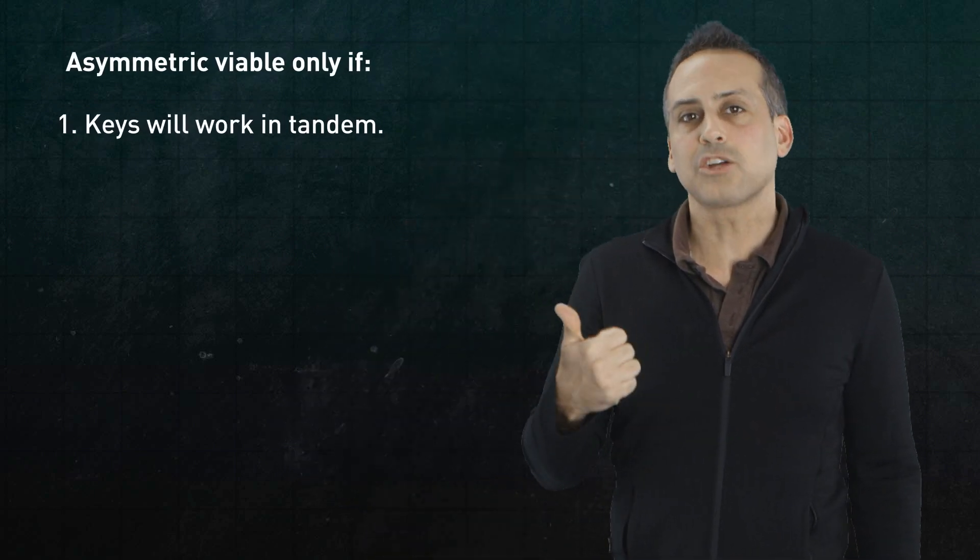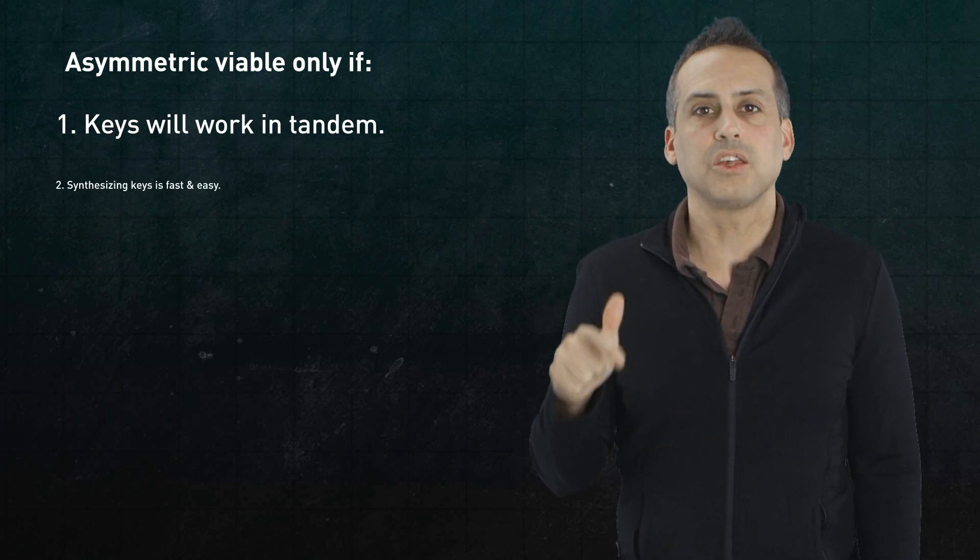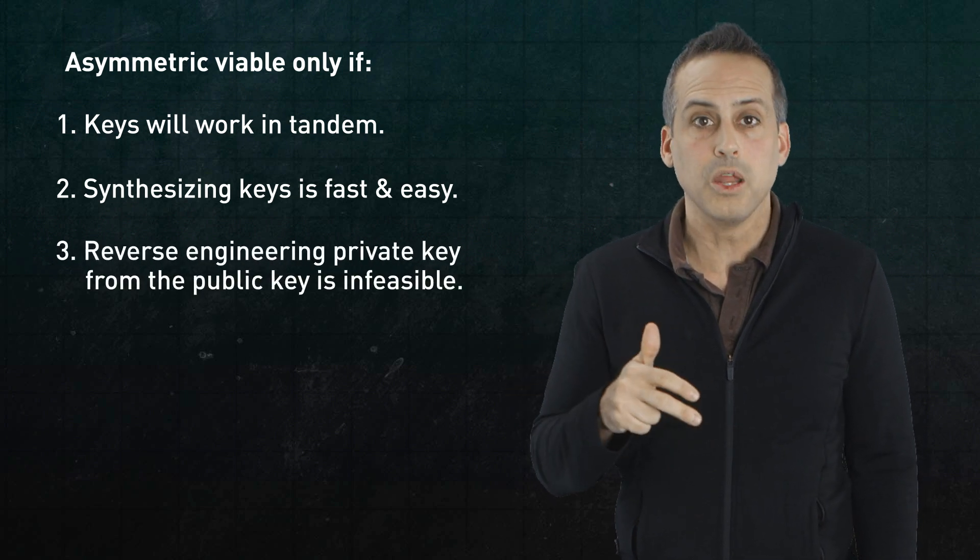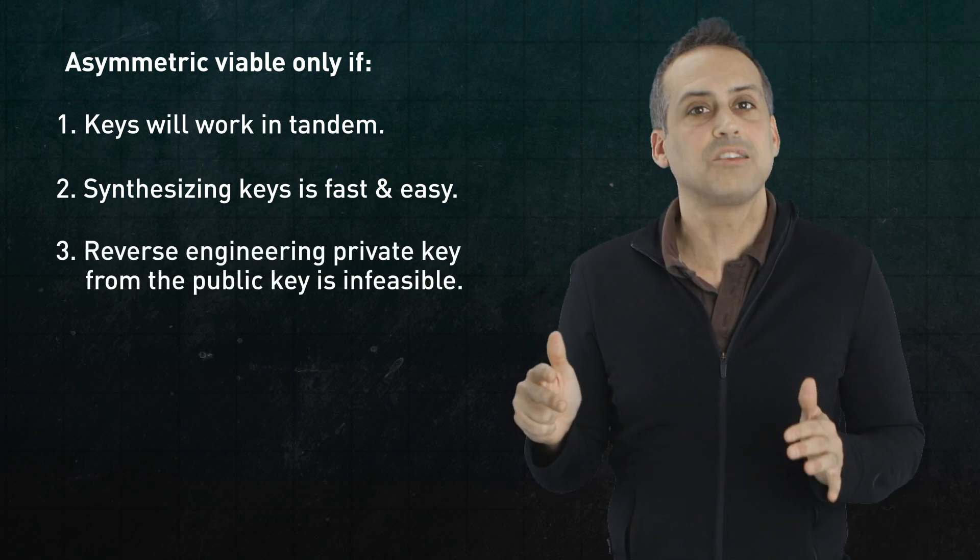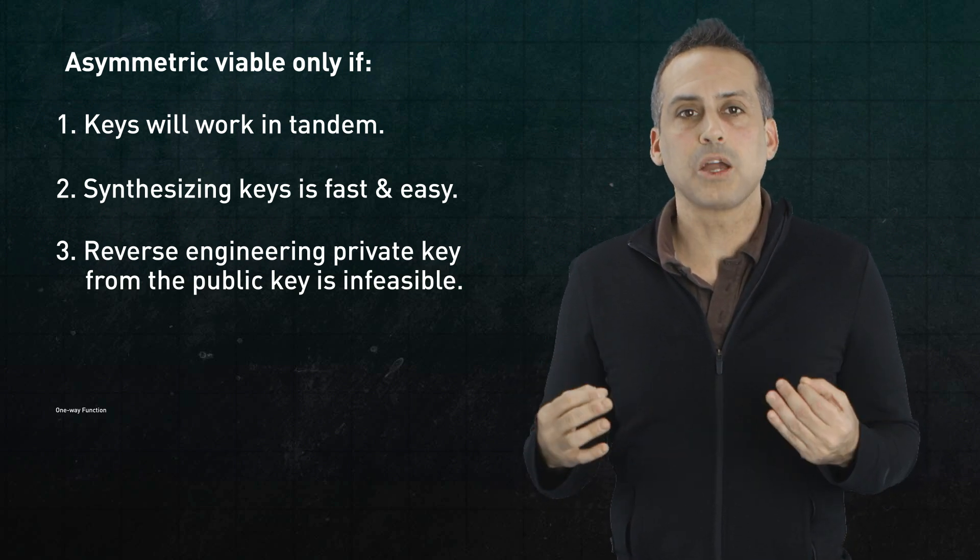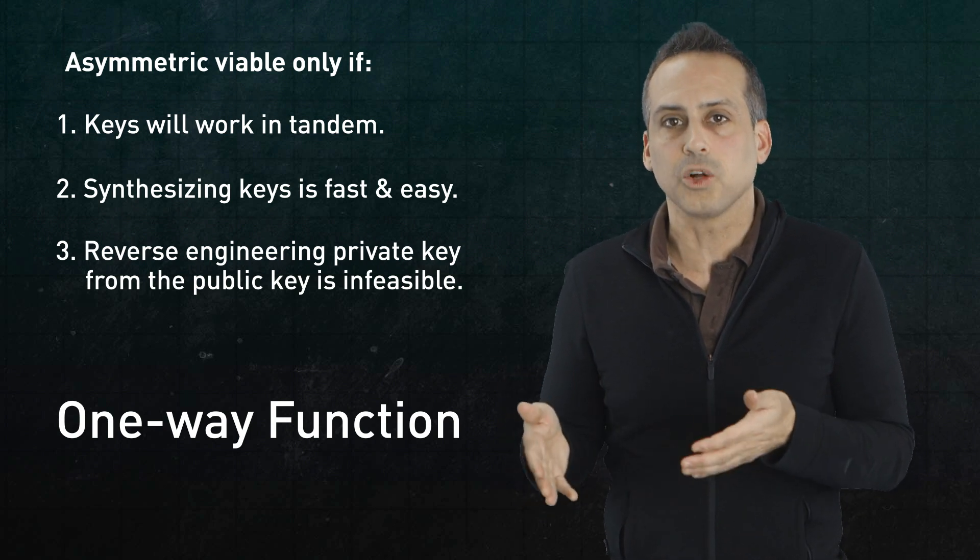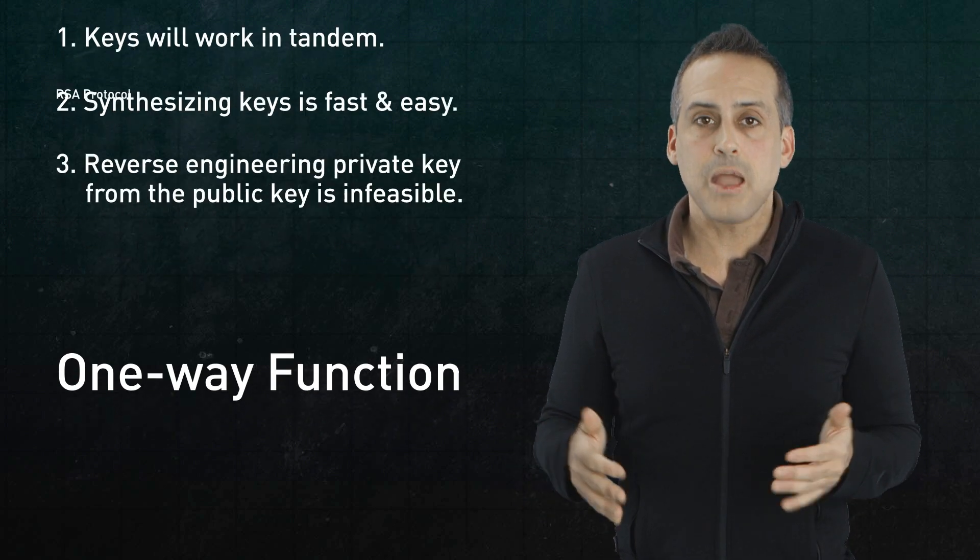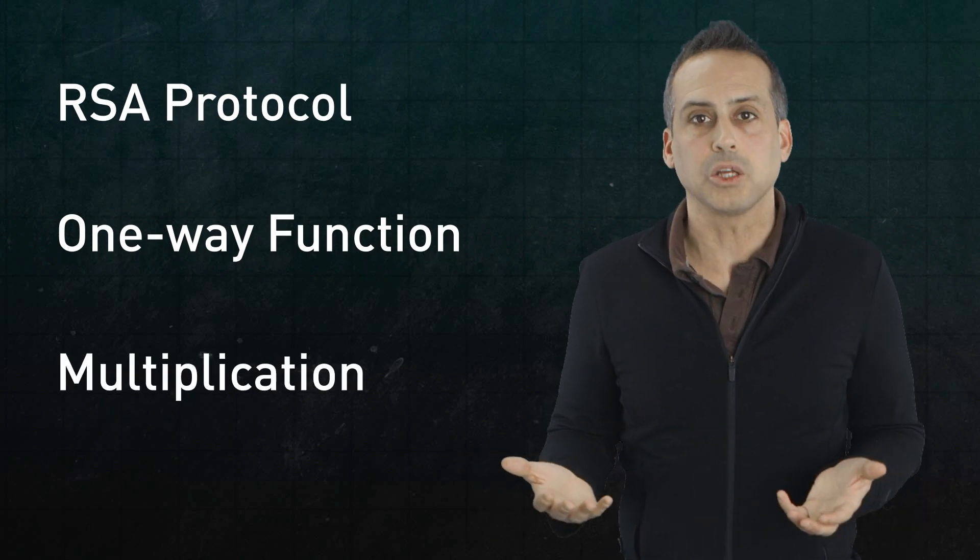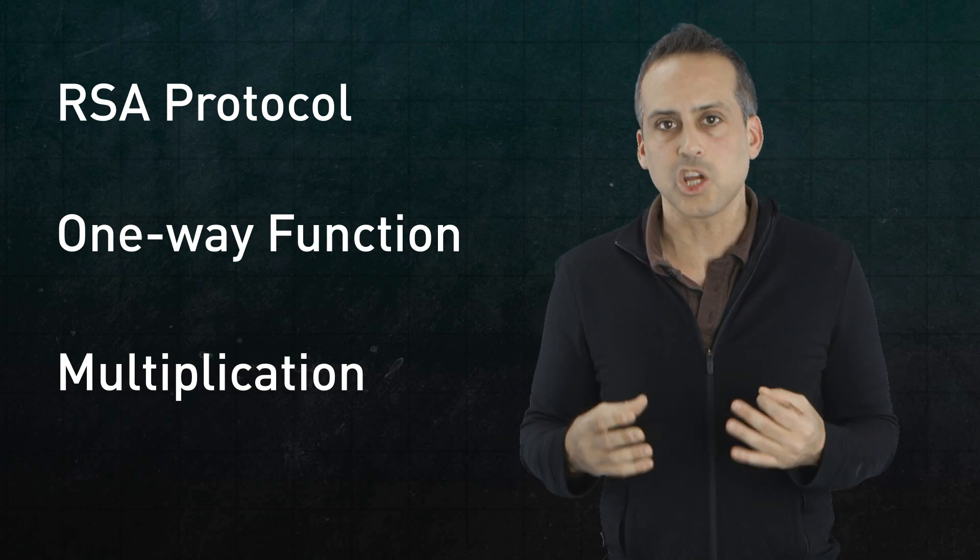First, that the keys will actually work in tandem like this. Second, that synthesizing the keys is fast and easy. And third, that reverse engineering the private key from the public one, while theoretically possible, is computationally infeasible. In short, we need something called a one-way function, some operation that's easy to do but exceedingly difficult to undo. In the famous RSA protocol, the one-way function is plain old multiplication. I won't get into details, because so much has been written about this elsewhere. But in a nutshell,